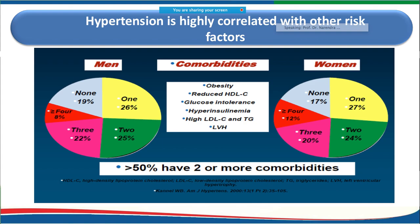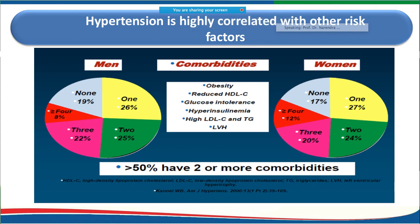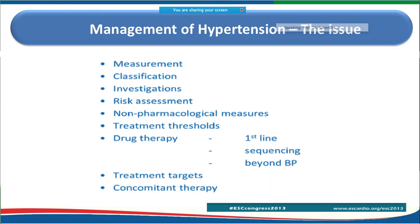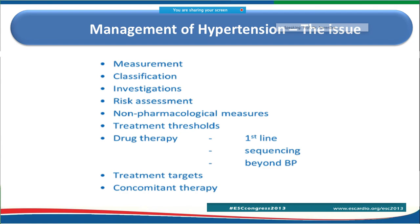Hypertension is correlated with other comorbidities including obesity, reduced good cholesterol, glucose intolerance, hyperinsulinemia, and high LDL cholesterol. In fact, half of the common population has two or more comorbidities. For management, we need to know how to measure and classify hypertension, the relevant investigations, risk assessment, treatment, and concomitant therapies.